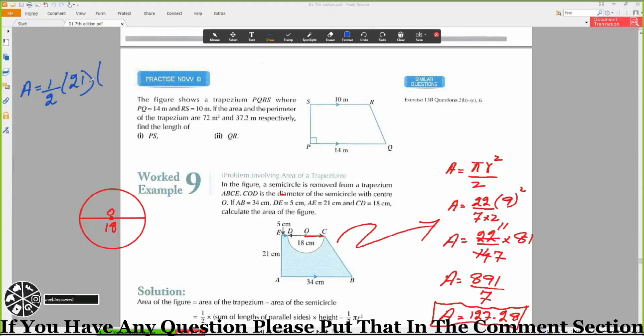AB plus CE. AB is given to you, that is 34, and CE is 18 plus 5, which equals 23. So your area will be equal to 1 divided by 2 times 21 times 57. So your area will be equal to 21 times 57 divided by 2, so you will get 598.5.